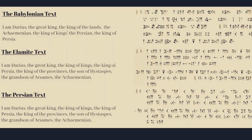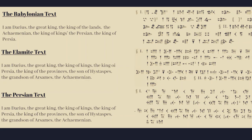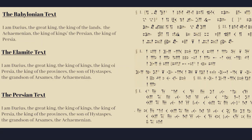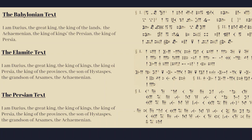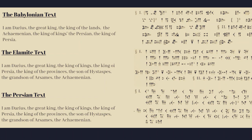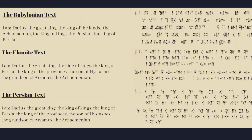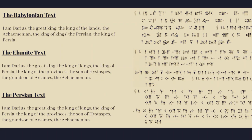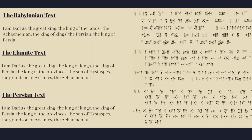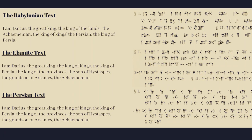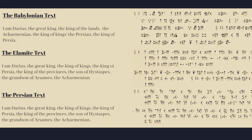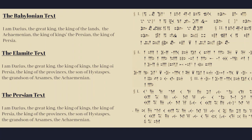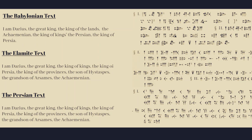The text from three different columns in three different scripts carries the same translation for common text. This is the key to deciphering the cuneiform script. Here is an example of one of the common texts found in this inscription.